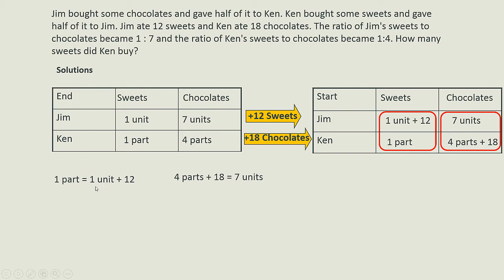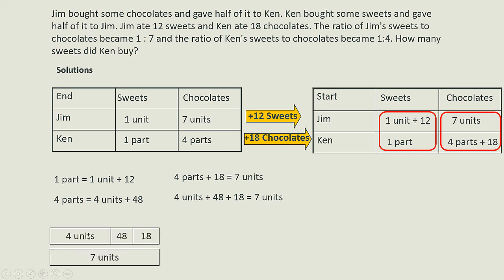To find the value of 1 unit, I take the first equation and multiply by 4, because I want to make 1 part into 4 parts. So 1 unit times 4 gives 4 units, and 12 times 4 gives 48. Since 4 parts equals 4 units plus 48, I substitute into the second equation: 4 units plus 48 plus 18 equals 7 units. So 3 units equals 66, which means 1 unit equals 22.